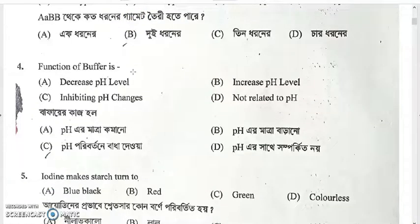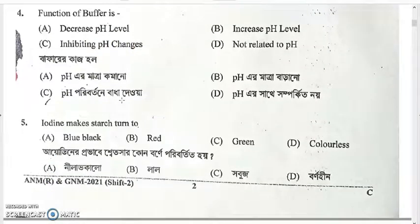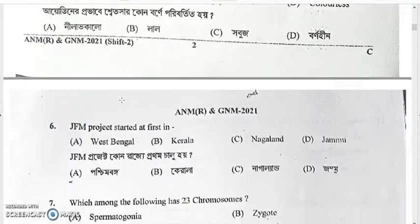Question four: the function of a buffer is that it inhibits changes in pH. Question five: iodine makes starch turn blue-black. Iodine reacts with starch and turns it blue-black in color. The answer is option A.